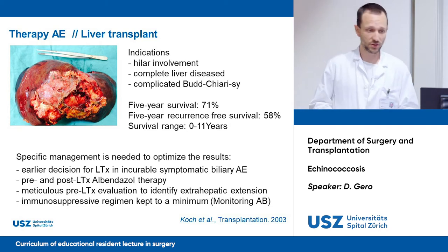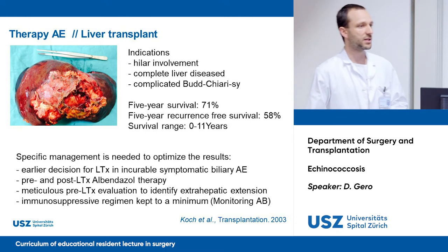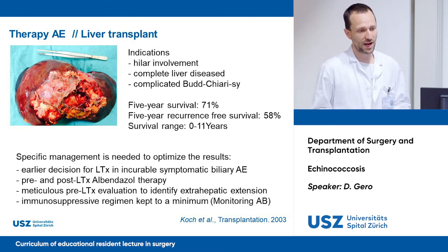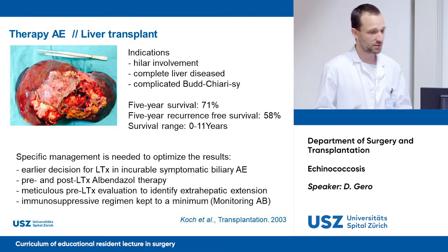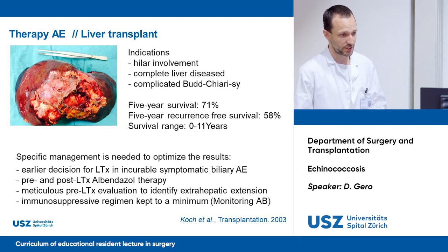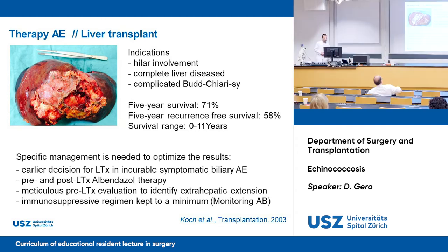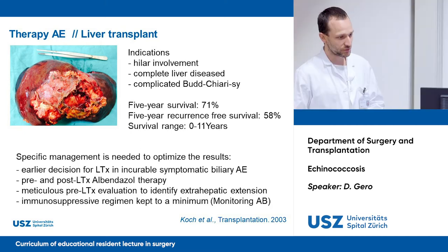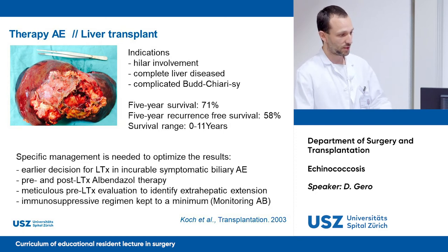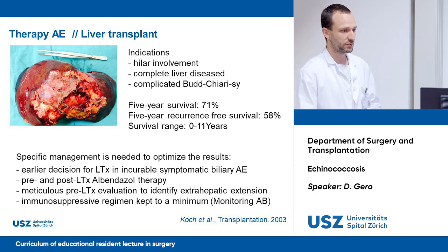The five-year survival of transplantation for echinococcosis is 71%, with a five-year recurrence-free survival estimated at 58%, and overall survival ranging between 0 and 11 years. When considering liver transplantation, we must administer albendazole pre- and postoperatively, meticulously evaluate for extra-hepatic lesions, and adapt the immunosuppressive regimen to a minimum to avoid disease recurrence.